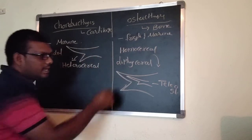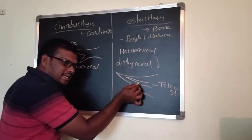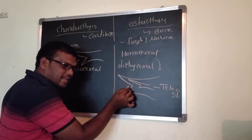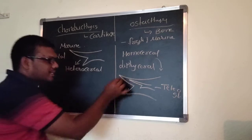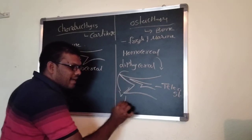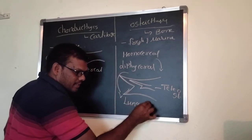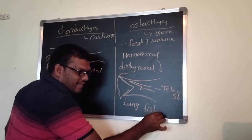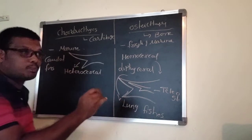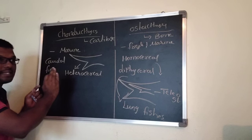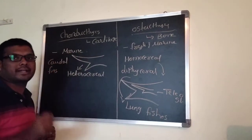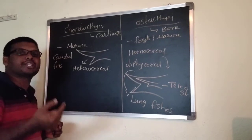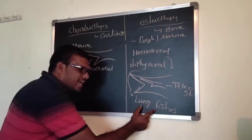Diphycercal means internally and externally equal caudal fins are present. The best example is the lung fishes. Basically, respiration takes place in the gills, but in lung fishes they are having sacs present. Through those sacs, respiration takes place. That's why it's called lung fishes.